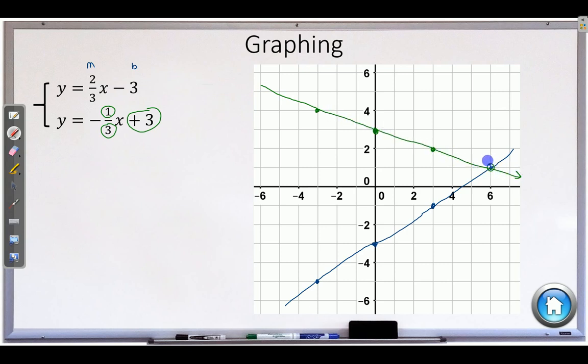You can see that they both cross right there at the point 6, 1. That is our solution right there. x is equal to 6 and y is equal to 1. That is where those two lines cross.